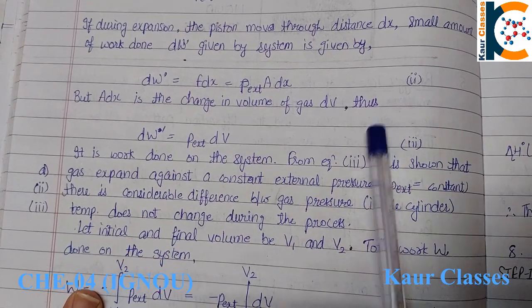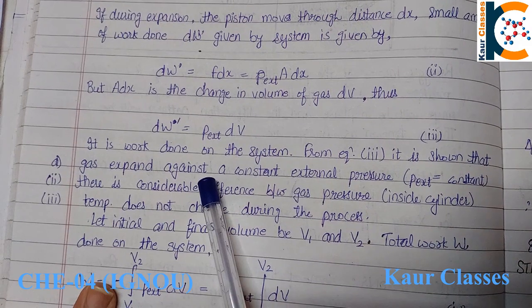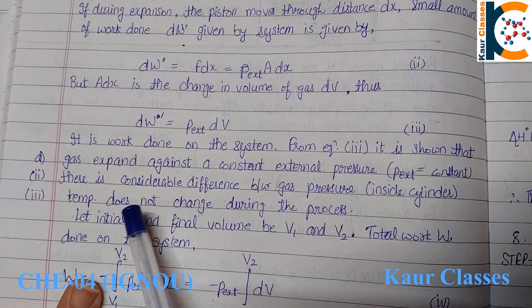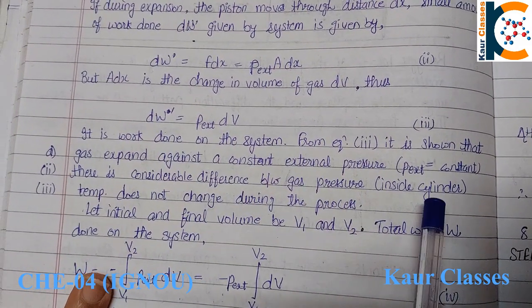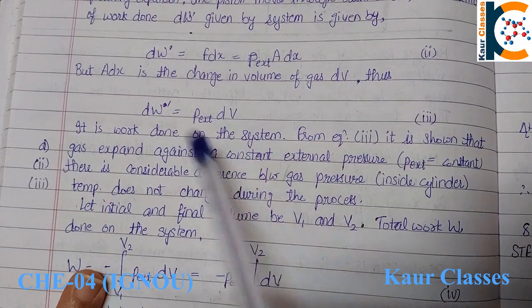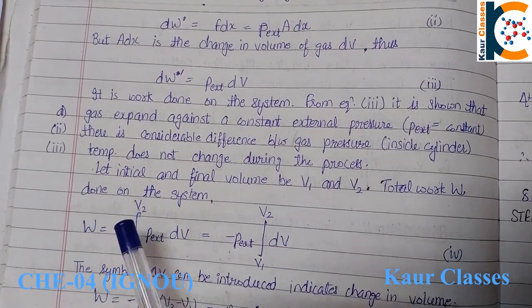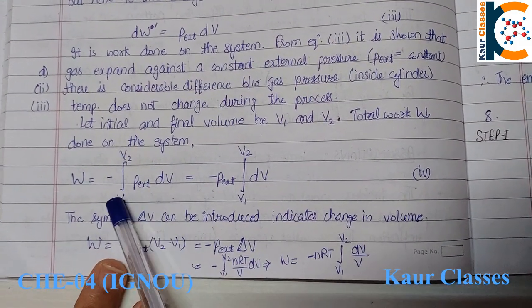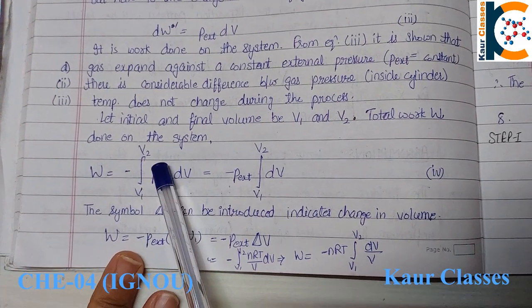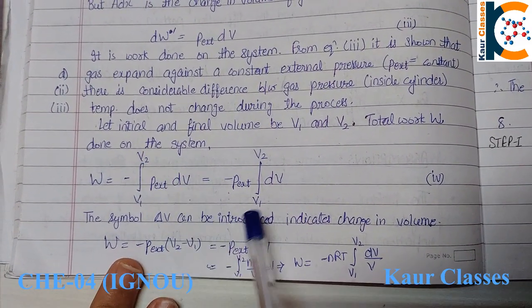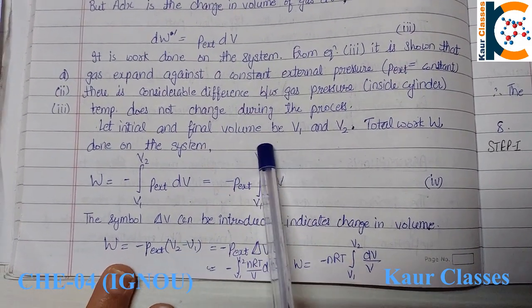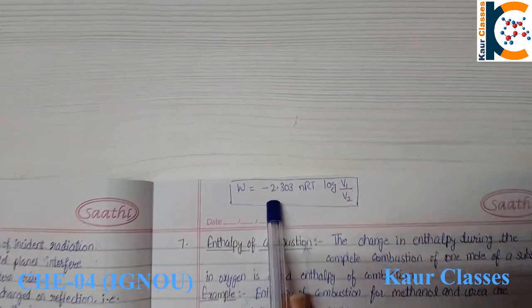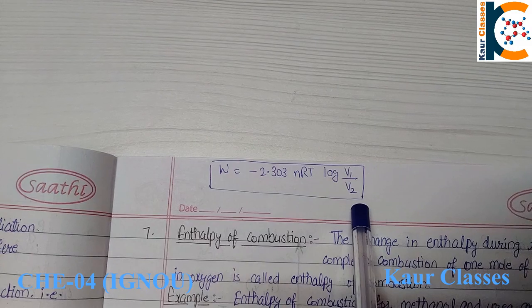Equation three shows the work done on the system when the gas expands against a constant external pressure. The temperature does not change during this process. Assuming initial and final volumes V1 and V2, the total work done is the integral from V1 to V2, giving the equation: W = −2.303 RT log(V1/V2). This is our answer for question 6.